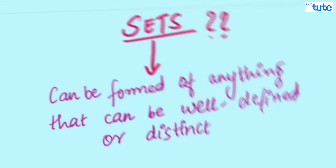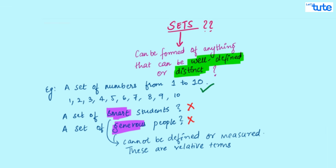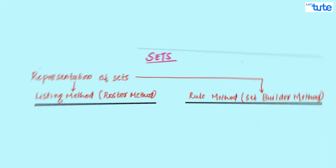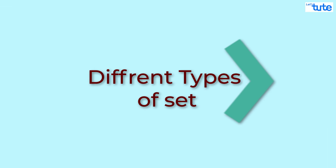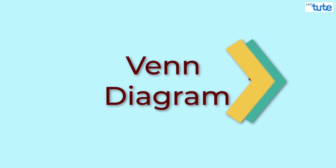So, till now we have seen that what is a set, things that can form a set, and ways to represent these sets. In our coming sessions, we will see what are the different type of sets, and also about the Venn diagrams.